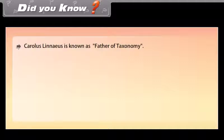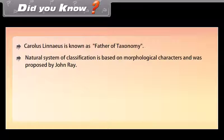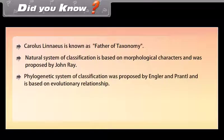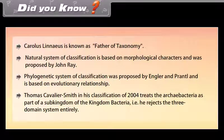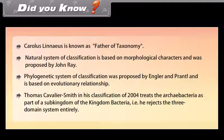Did you know? Carolus Linnaeus is known as the Father of Taxonomy. The natural system of classification is based on morphological characters and was proposed by John Ray. The phylogenetic system of classification was proposed by Engler and Prantl and is based on evolutionary relationships. Thomas Cavalier-Smith in his classification of 2004 treats the Archaeobacteria as part of a sub-kingdom of the kingdom Bacteria, rejecting the three-domain system entirely.